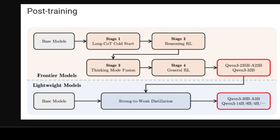Pre-training occurred in three stages. First, the model was pre-trained on over 30 trillion tokens with a context length of 4K, providing basic language skills and general knowledge. In stage two, they increased the proportion of knowledge-intensive data — science, math, coding, and reasoning — and pre-trained on an additional 5 trillion tokens. In the final stage, high-quality long-context data was used to extend the context length to 32K tokens, which can be further extended to 131,072 tokens using YaRN.